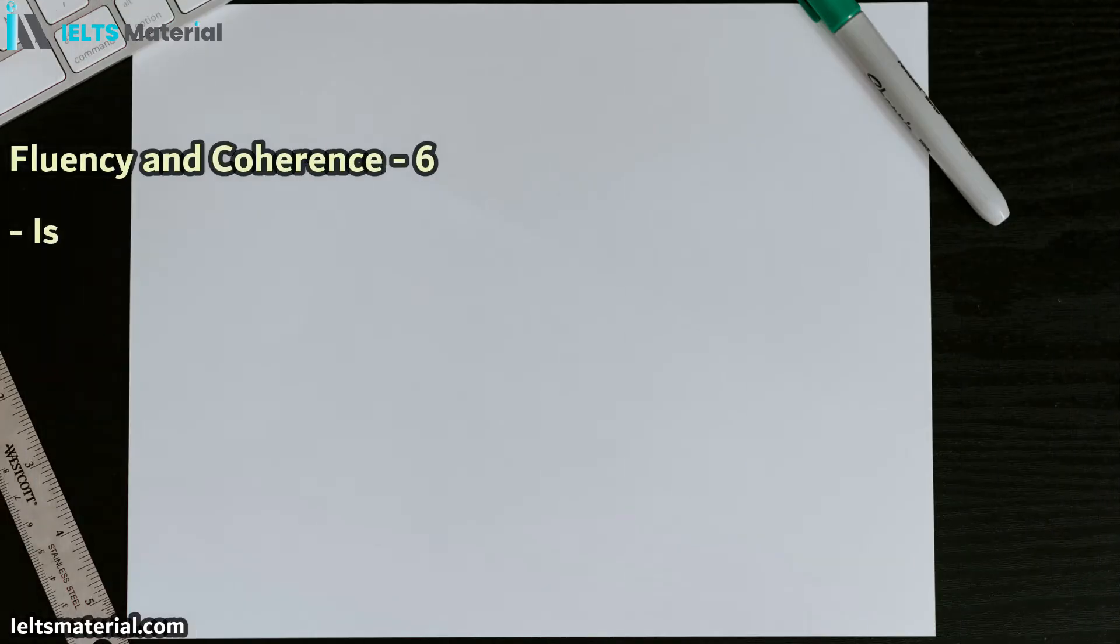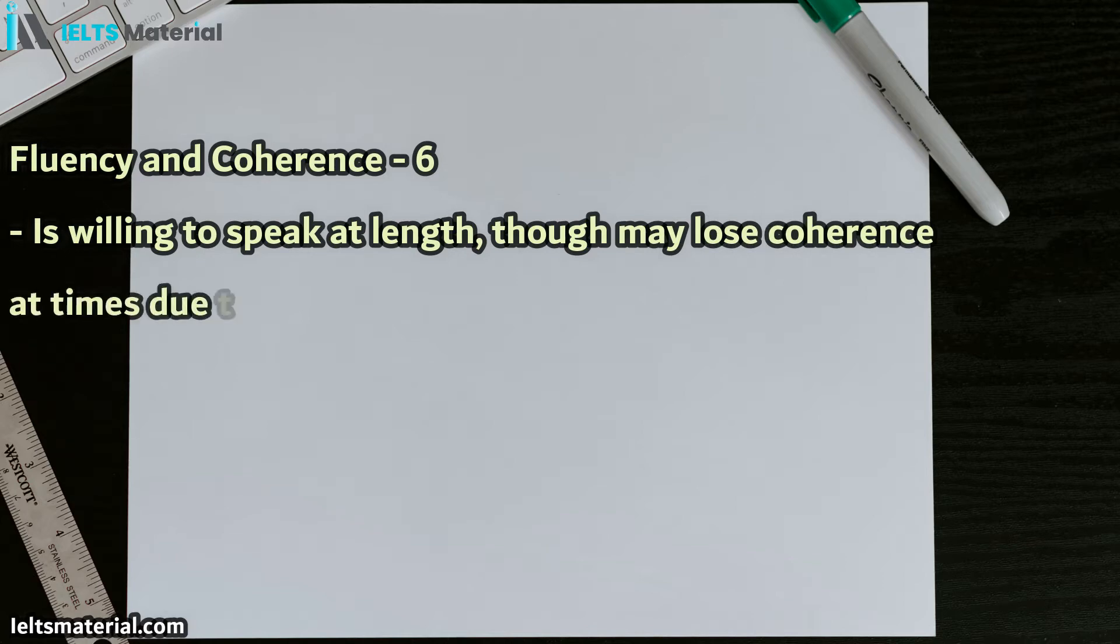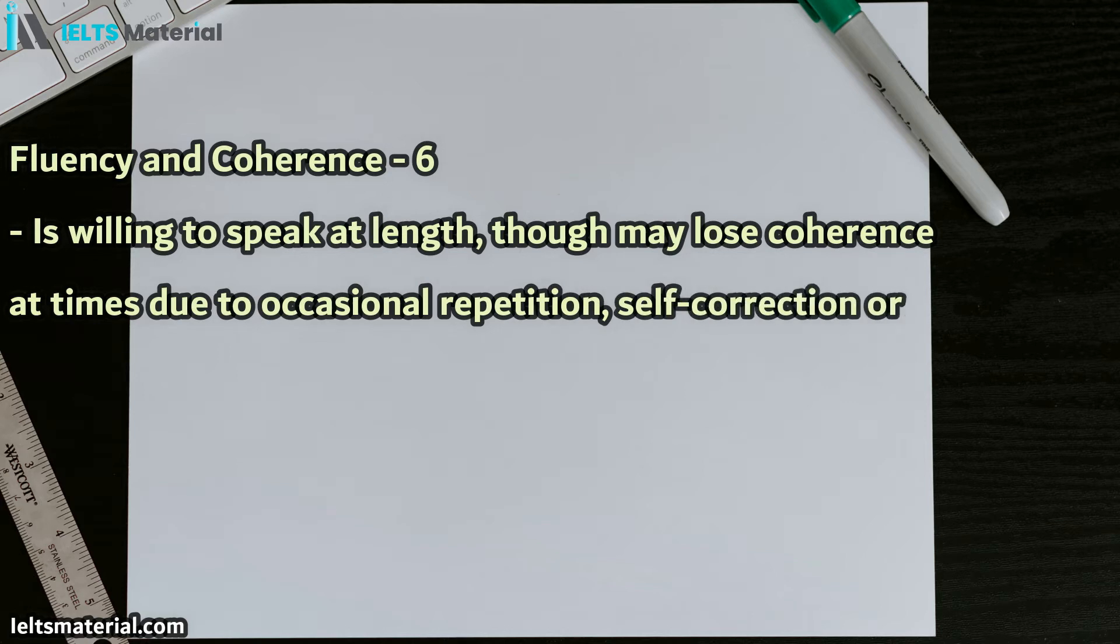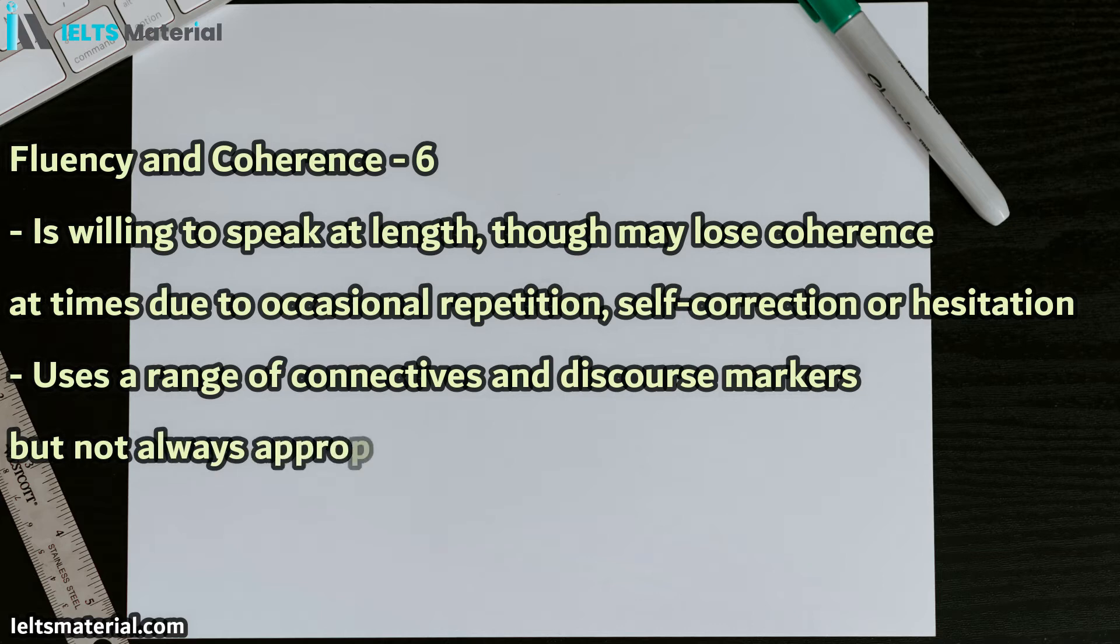The first category is fluency and coherence. This is what you can expect at level 6, or band 6. The candidate is willing to speak at length, though may lose coherence at times, due to occasional repetition, self-correction, or hesitation. This means your ability to keep talking. And you need to use a range of connectives and discourse markers, but not always appropriately. This is using things like however, although, basically connecting your ideas so that you are easy to listen to.